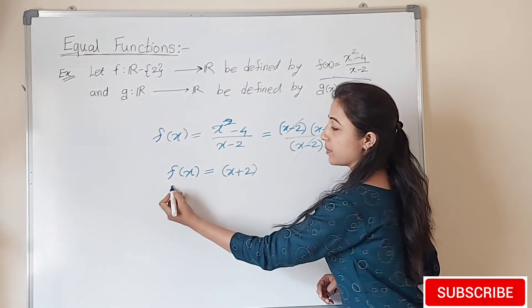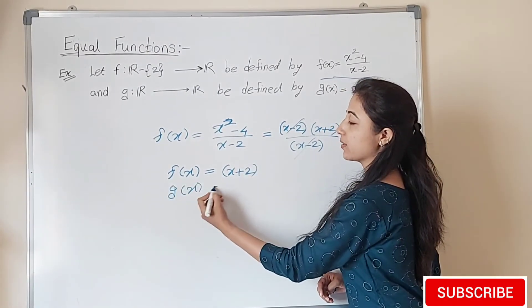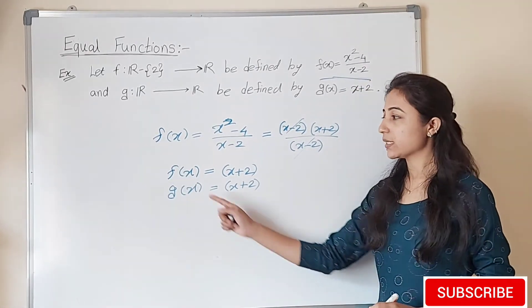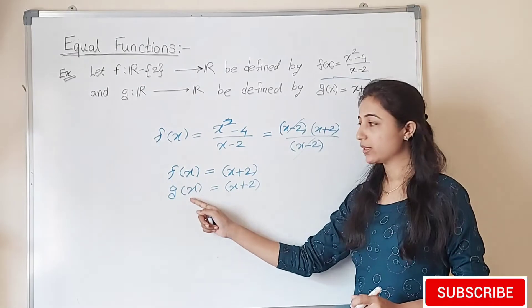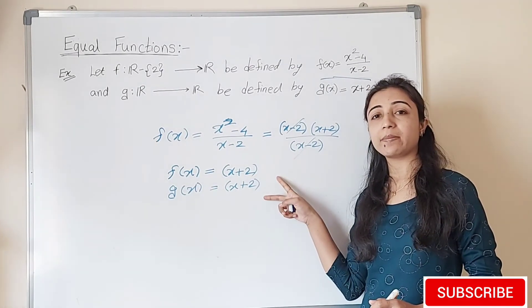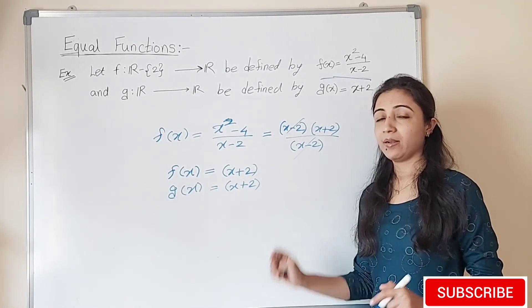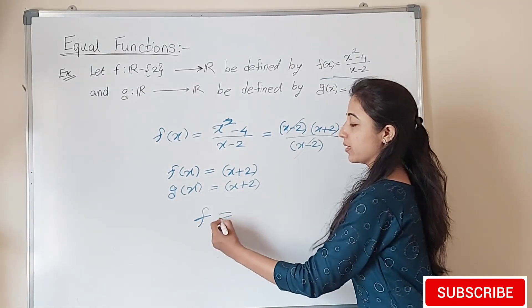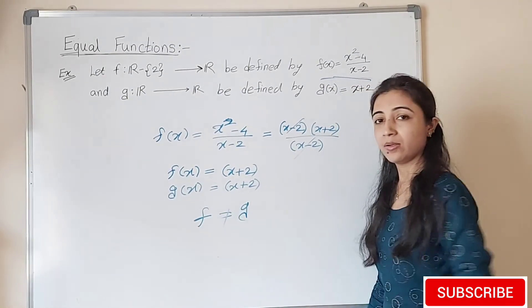And g(x) is already in the form x plus 2. g(x) equals x plus 2. So obviously if you put any value of x in f or g, the corresponding images will be the same. But still we are saying these functions f and g are not equal. Why? Because their domain is not same.